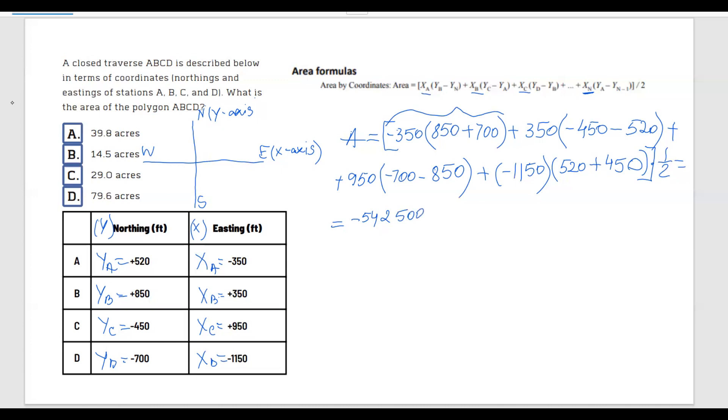Next, I have 450 minus 520, we add them up, and we have 350 multiplied. So next I get -339,500. Moving forward, we have 700 negative, 850 negative, add them up, 950 multiply. So the next term is -1,472,500.